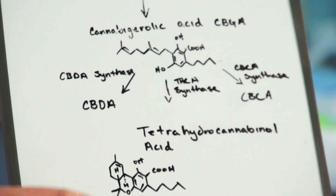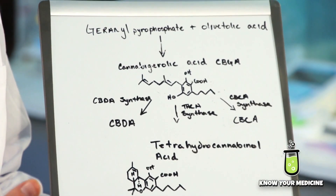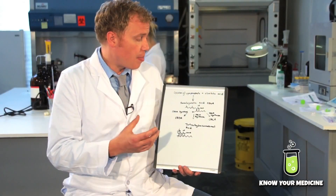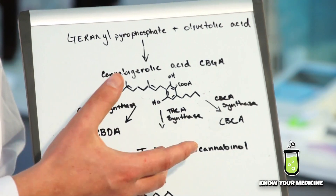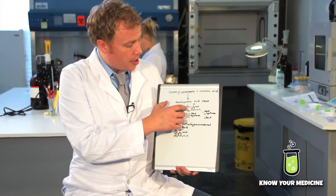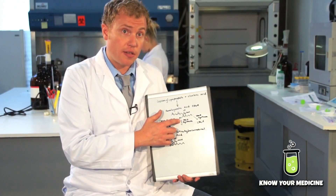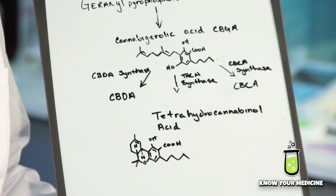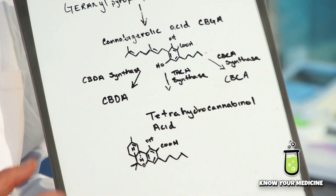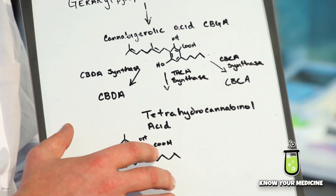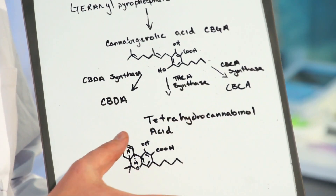We have a drawing of basically the synthetic pathway that THCA takes. We start out with geranyl pyrophosphate and olivetolic acid — they combine to form cannabigerolic acid, another acidic cannabinoid. The cannabigerolic acid, or CBGA, basically folds in upon itself and forms rings, which gives us the final structure using the THCA synthase enzyme to form THCA. THCA is very similar to THC — the only difference is this carboxylic acid group attached to the THCA.